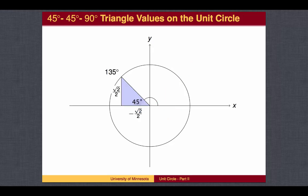We get the same values at 135 degrees, except we are now moving to the left rather than to the right, so the x-coordinate — that is, the cosine — should be a negative value. Sine of 135 degrees is still above the center line, so it is positive. The cosine of 135 degrees is negative square root of 2 over 2, and the sine of 135 degrees is the square root of 2 over 2.